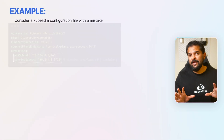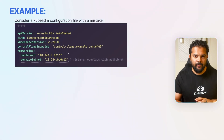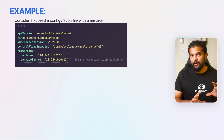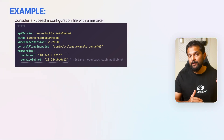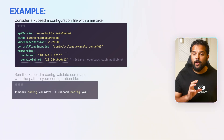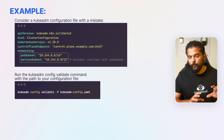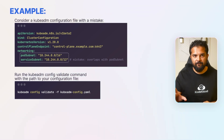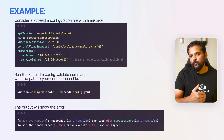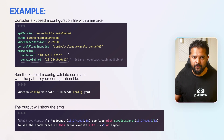Consider a kubeadm configuration file with a mistake where the service subnet overlaps with the pod subnet, which is not allowed. When you run the kubeadm config validate command with the path to your configuration file, the output will show the error and tell you exactly what the problem is in specifying the subnets.